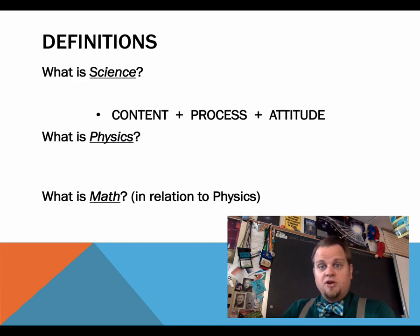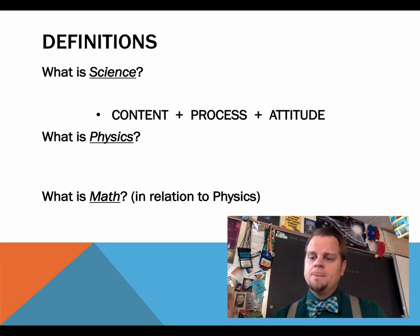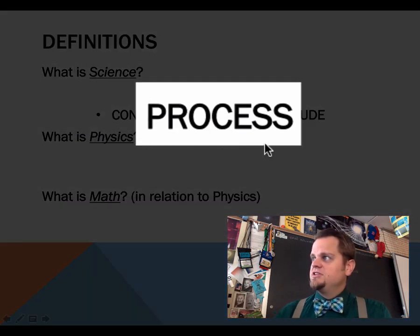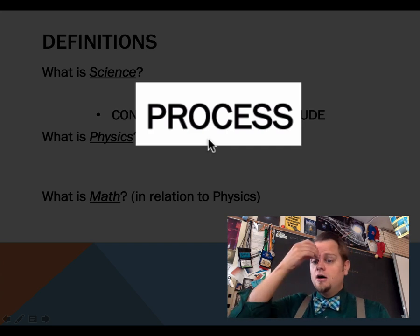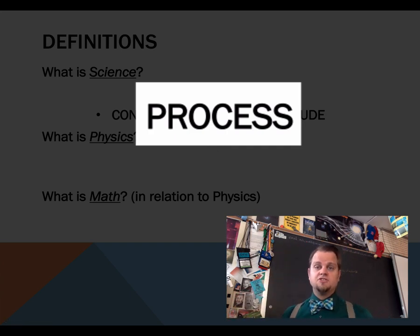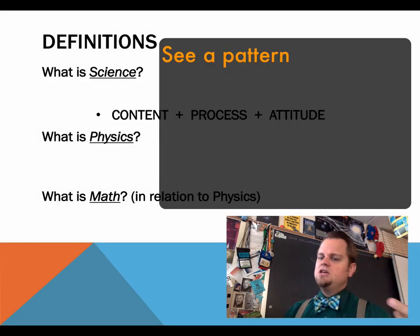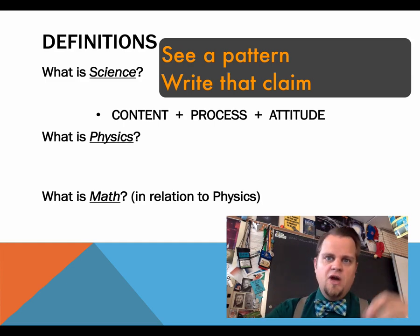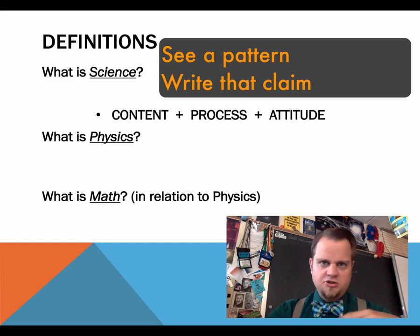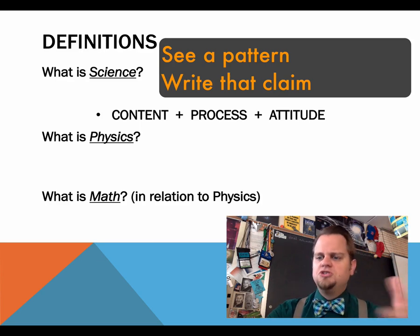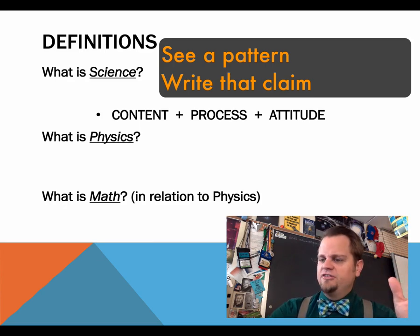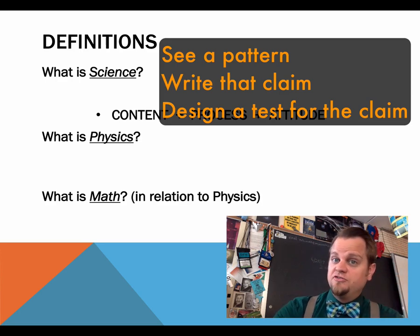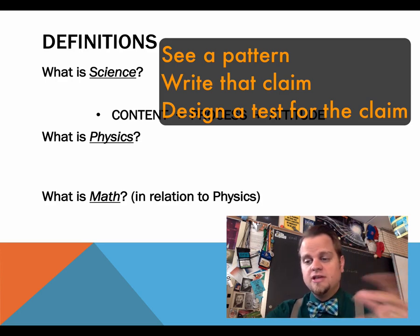So let's move on to the process because there's a way in which we find it out and that process is just as important. The process is the means by which science discovers the content. It's also known as the scientific method. So let's say you see a pattern in the way the world works. You write that claim down in a way that it can be tested, either confirmed or refuted, supported or denied. Then you test, you design a test that could either confirm or refute that hypothesis.